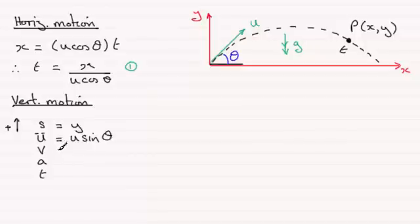As for v, the final speed in the vertical sense at this point here, I'm not really interested in it. I don't need to know it. So we'll just ignore that one. As for acceleration, that acts downwards in the negative sense here. So it's going to be minus g. And then the time t, well that's going to be what we've got from one.